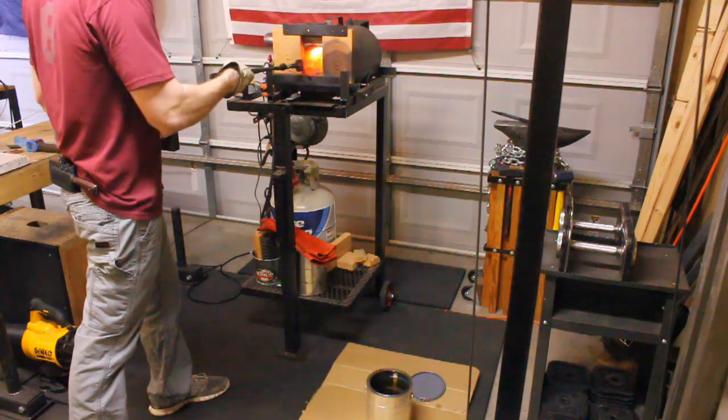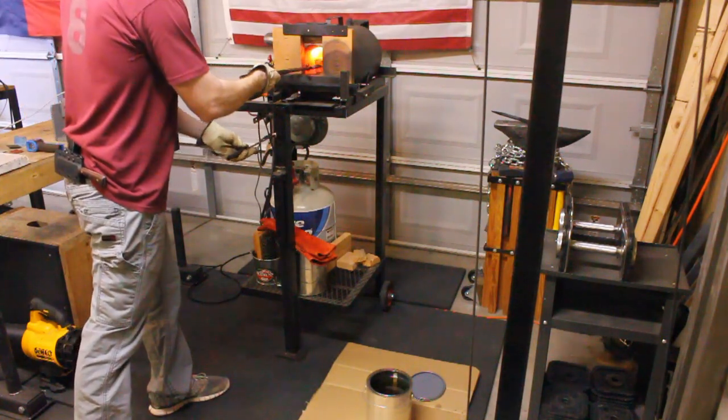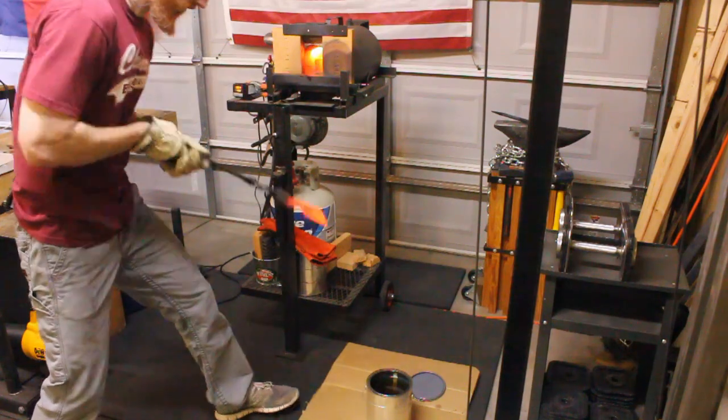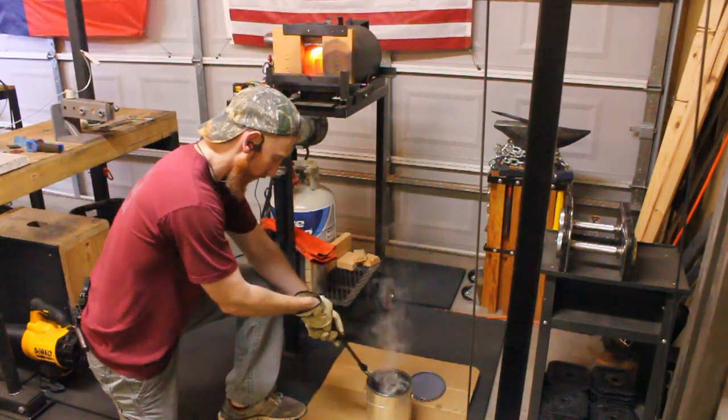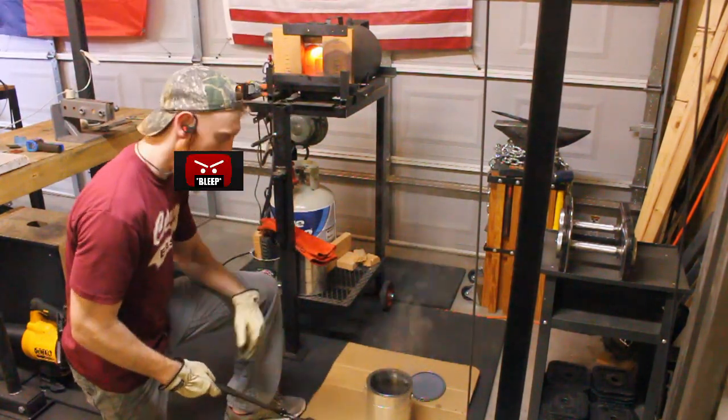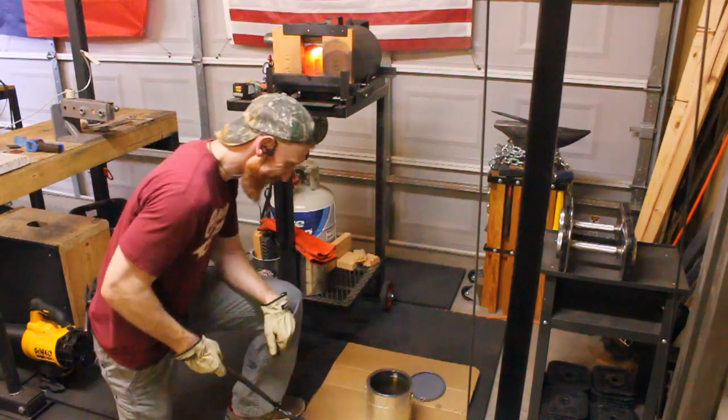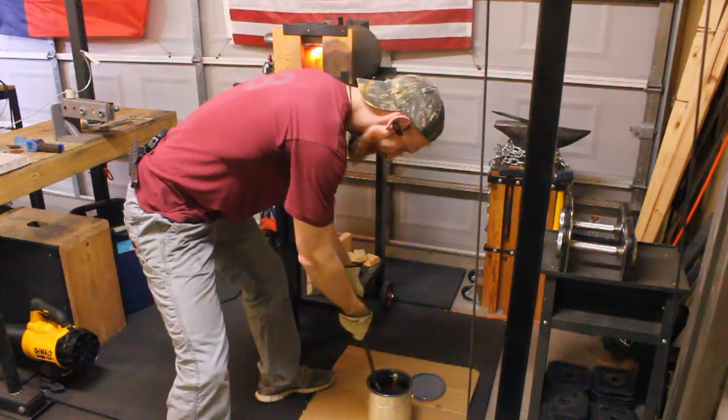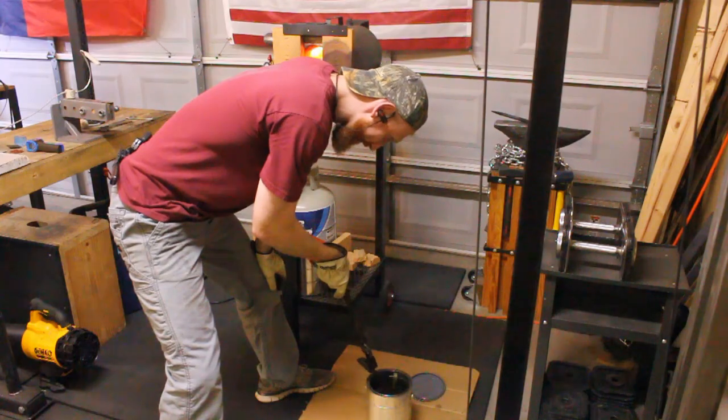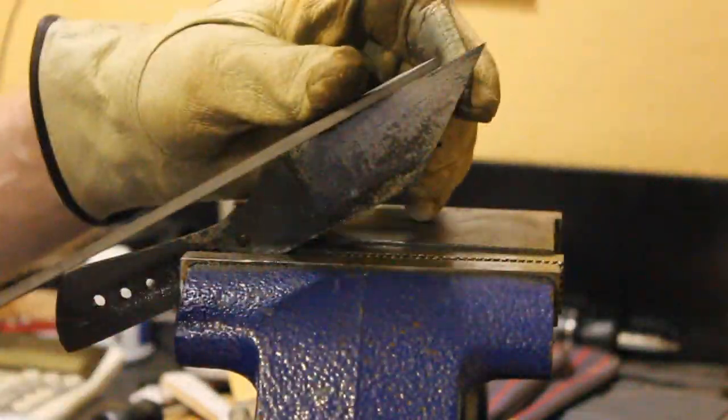Then I get the blade up to just above critical, around 1500 degrees F, and quench it in 120 degree canola oil. I get the oil up to 120 degrees by putting a little hot piece of metal in there beforehand. I check that temperature with a temp gun.